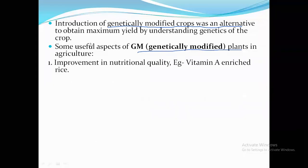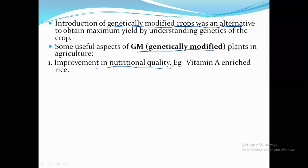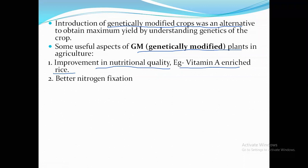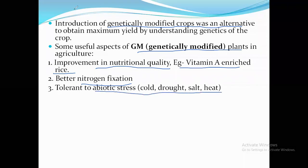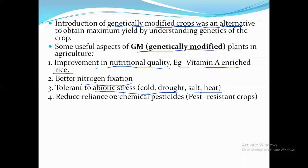Genetically modified crops have been developed for several purposes. First, improved nutritional quality — for example, vitamin A-enriched rice, since rice generally does not have vitamin A, but if you add the gene for it, rice will also provide vitamin A. Second, better nitrogen fixation — we can increase the nitrogen fixation in plants. Third, tolerance to biotic and abiotic stress, meaning cold, drought, salt, and heat resistance. We can also reduce the reliance on chemical pesticides by developing pest-resistant crops without using chemicals.